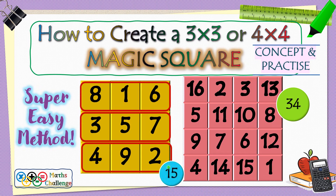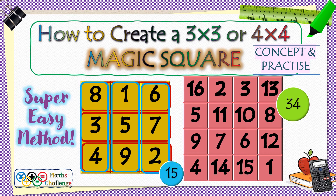The same holds true for numbers in the columns. Whether you take the first column, the second, or the third, the numbers add up to the value 15. Also, numbers across the two diagonals add up to 15. It's simply magical.